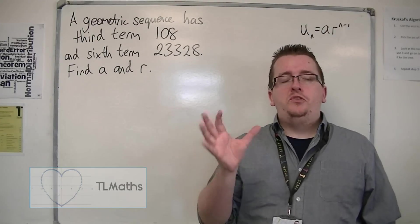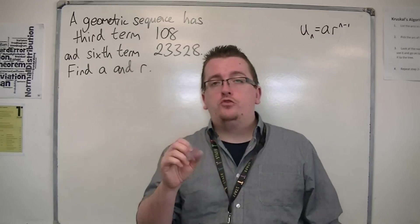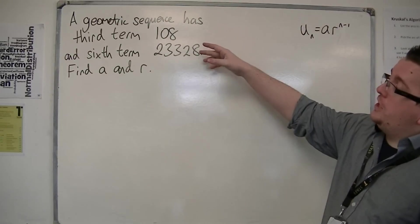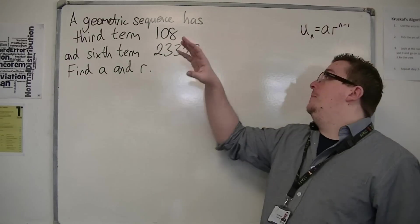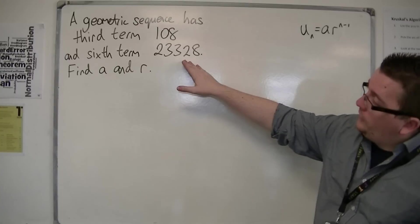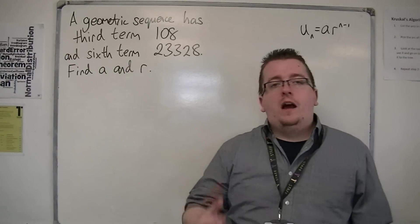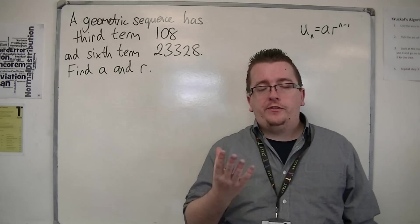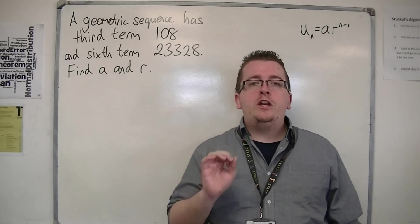Let's say we're given two terms in a geometric sequence. The third term is 108 and the sixth term is 23,328. What we're asked to do is find the first term A and the common ratio R.